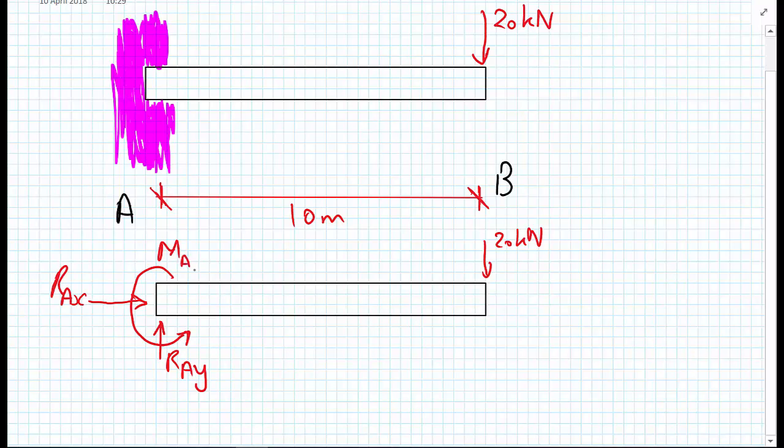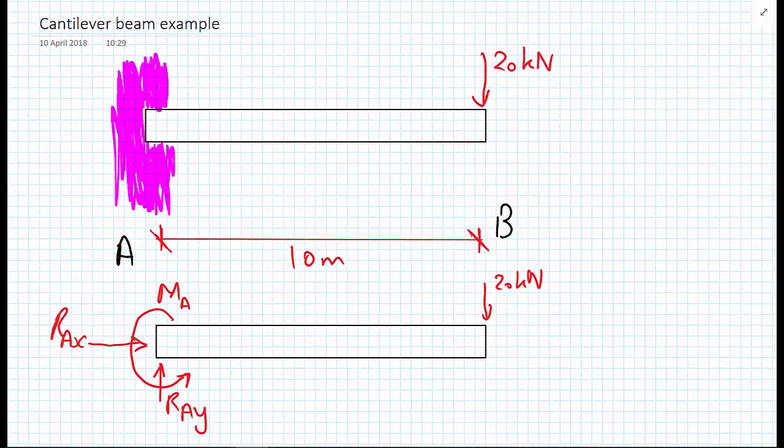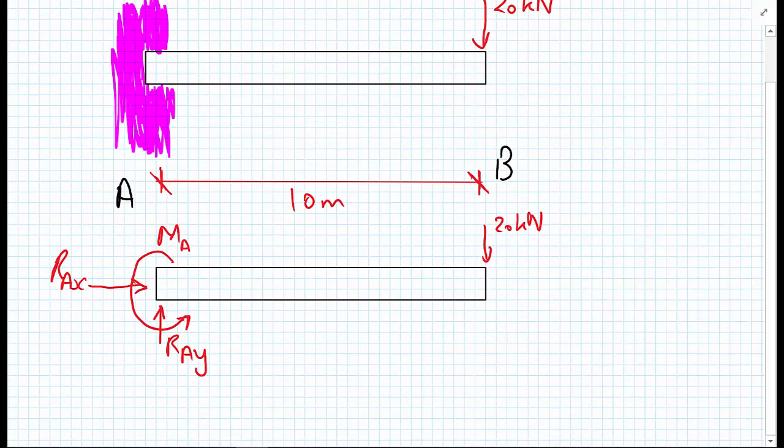And this case is encountered all the time in civil engineering. This is what's called a cantilever beam. And this support condition where we have fixities in both translational directions and can give a moment as well is what we might call fully fixed.